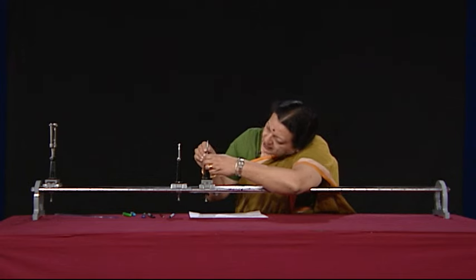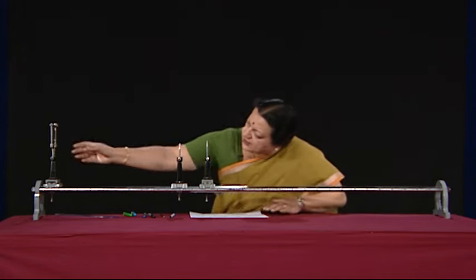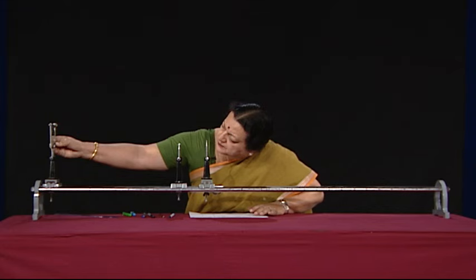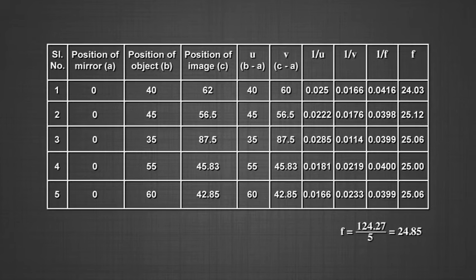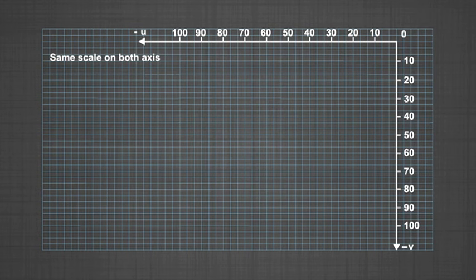If there is a slight alignment difference, adjust by raising or lowering the pins using the screws attached to the uprights. Take five readings. You can plot a graph of u and v — keeping sign convention in mind, both distances are negative, so you will get a graph in the third quadrant, with minus u on the x-axis and minus v on the y-axis.